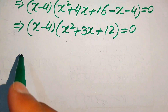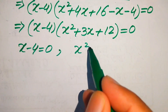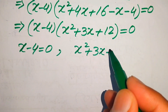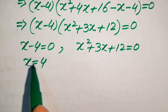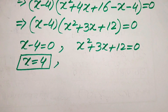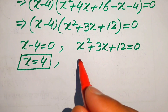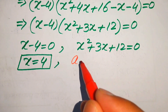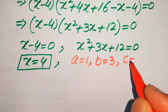We split this into two cases. Case one: x minus 4 equals 0, giving x equals 4 as the first real root. Case two: x squared plus 3x plus 12 equals 0. To solve this quadratic equation we apply the quadratic formula, with coefficients a equals 1, b equals 3, and c equals 12.